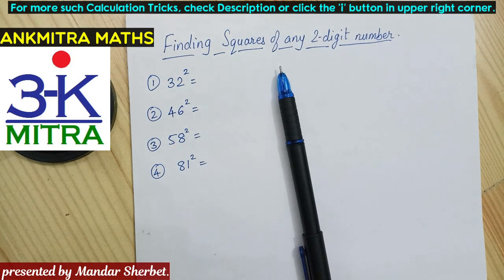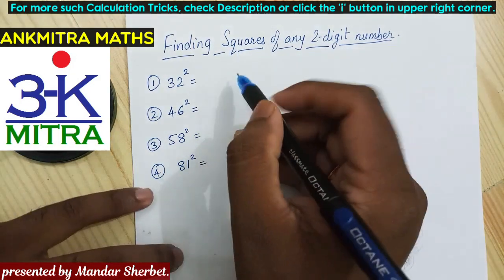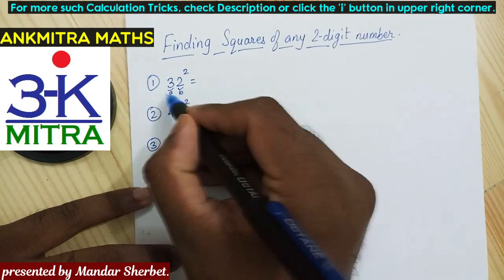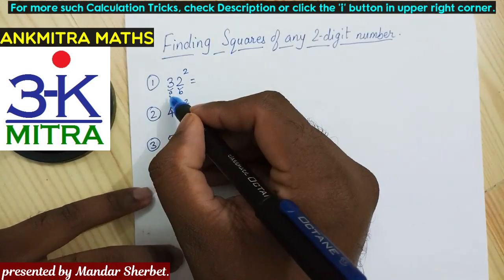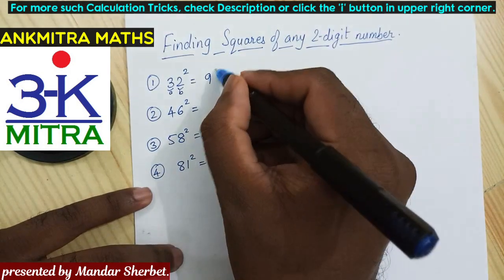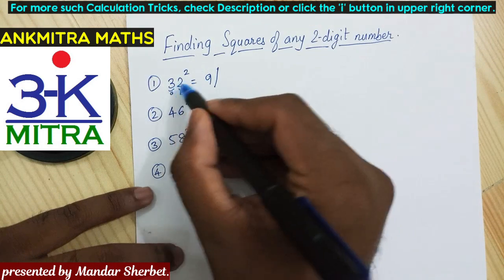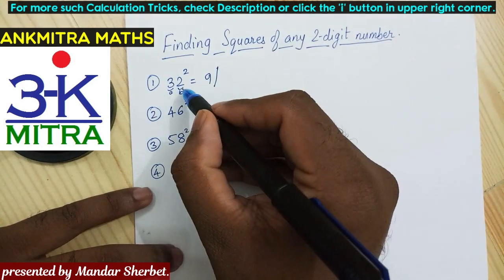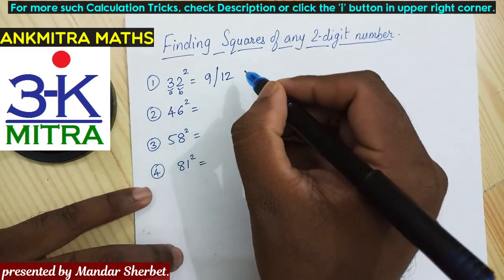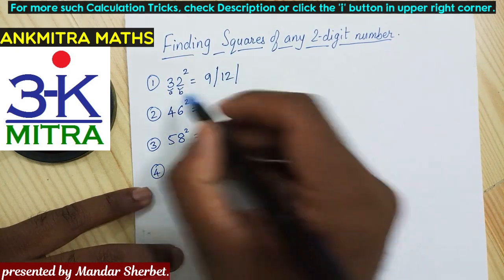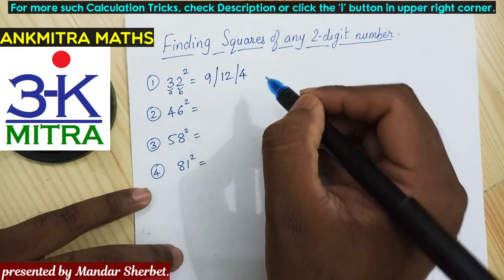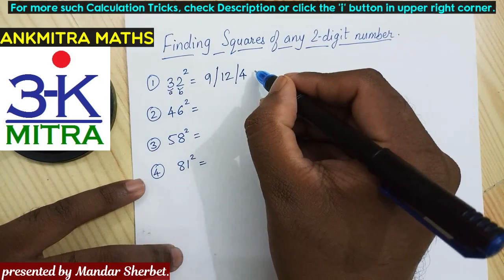The first number is 32. To find 32 squared, take the tens digit as 'a' and the units digit as 'b'. First, write down the square of a: 3 squared is 9. Then put a partition and multiply a by b: 3 multiplied by 2 is 6 — double it to get 12, so write down 12. Then put another partition and write the square of b: 2 squared is 4.